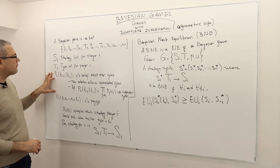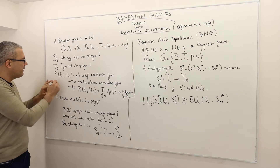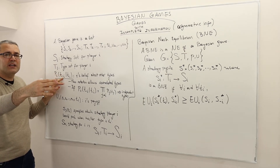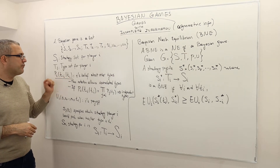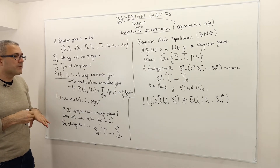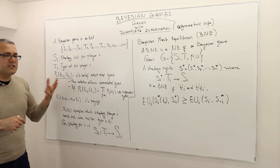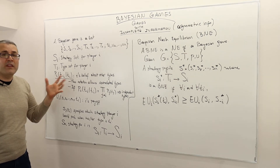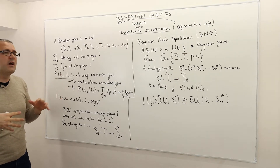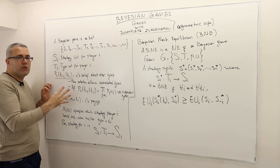One more additional thing not described here is the probability — the player's belief about other types. We denote it by Pi. It's a conditional probability: T sub minus I, which means the type of all the other players except player I, conditional on player I's type. This notation allows correlated types. So maybe your type and the other players' types are correlated, which is very well possible. For example, in a football game, the types can be determined by whether the weather is rainy, snowy, or sunny. If this is how the types are determined, then your type and your opponent's type may be correlated depending on the weather. So this notation allows correlation in that sense.